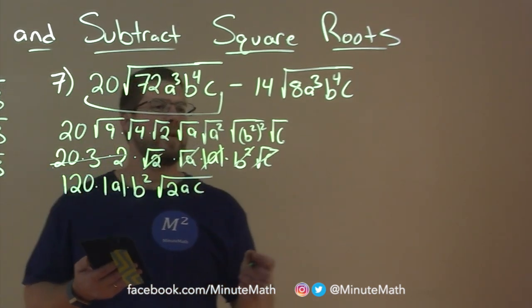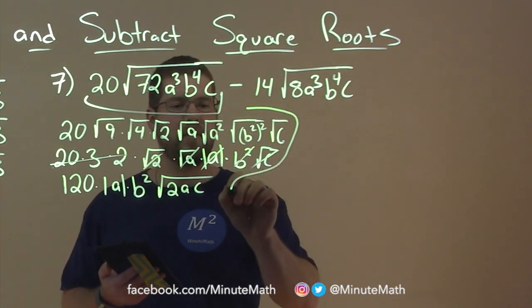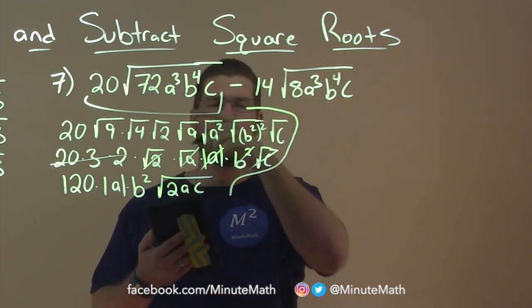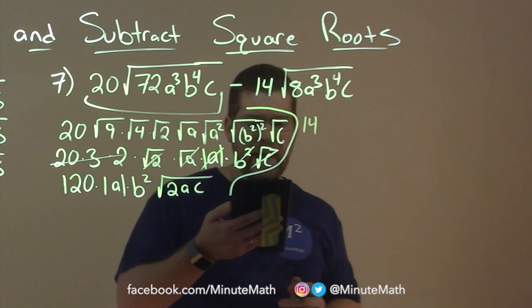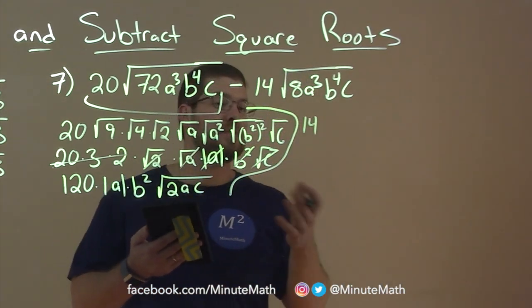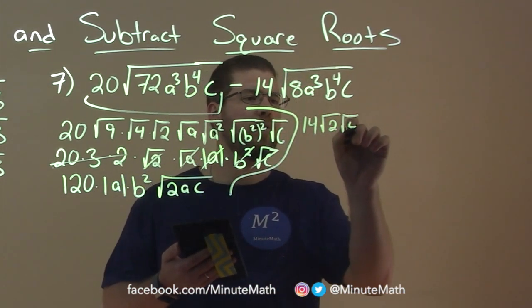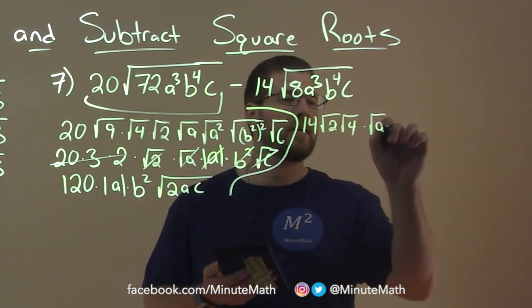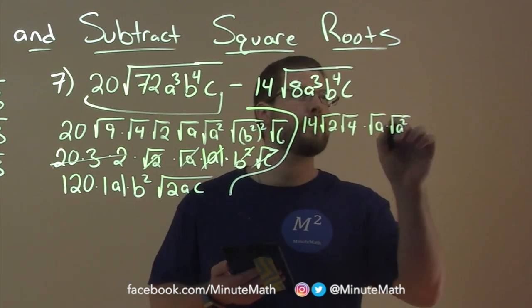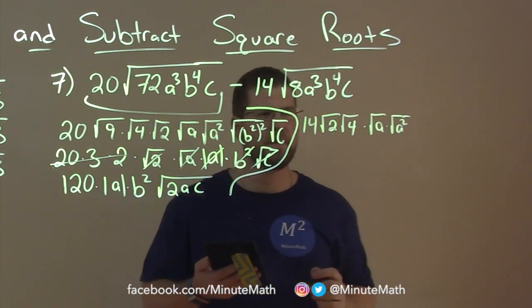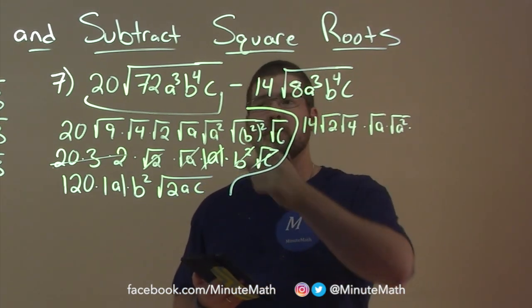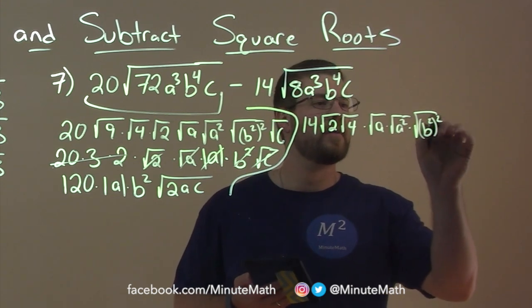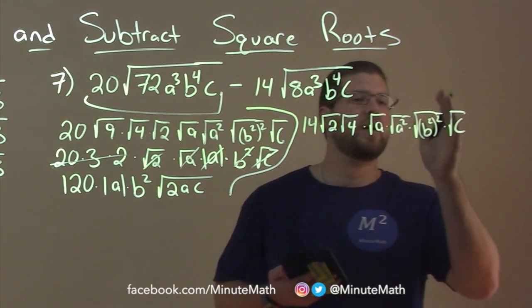So this last part here, let's see if we can maybe separate this here. I'm going to do this last part. Let's break it down how we can, just like we did before. 14 comes out, and 8 is square root, or 8 is 2 times 4. So that's the square root of 2 times the square root of 4. Now same thing with a to the third. We have square root of a times square root of a squared. Same thing with b to the fourth like we did earlier. That's the square root of b squared squared. And lastly, square root of c.